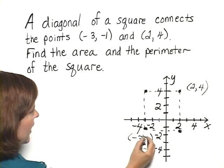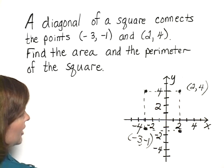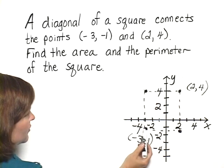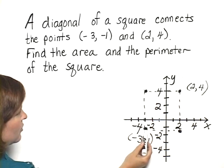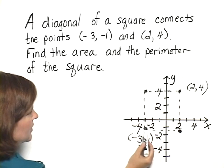What's the length of a side? Since we have it drawn out, we can actually count it out. Start here at negative 1 and go up to 4. That's going to be 5 units here, and it's also 5 units across here.